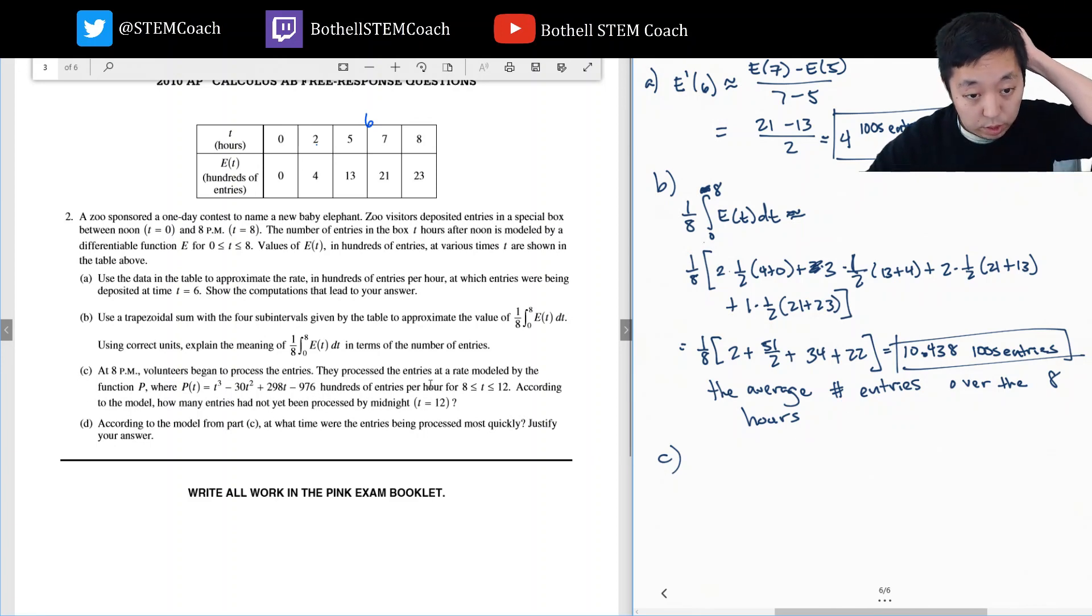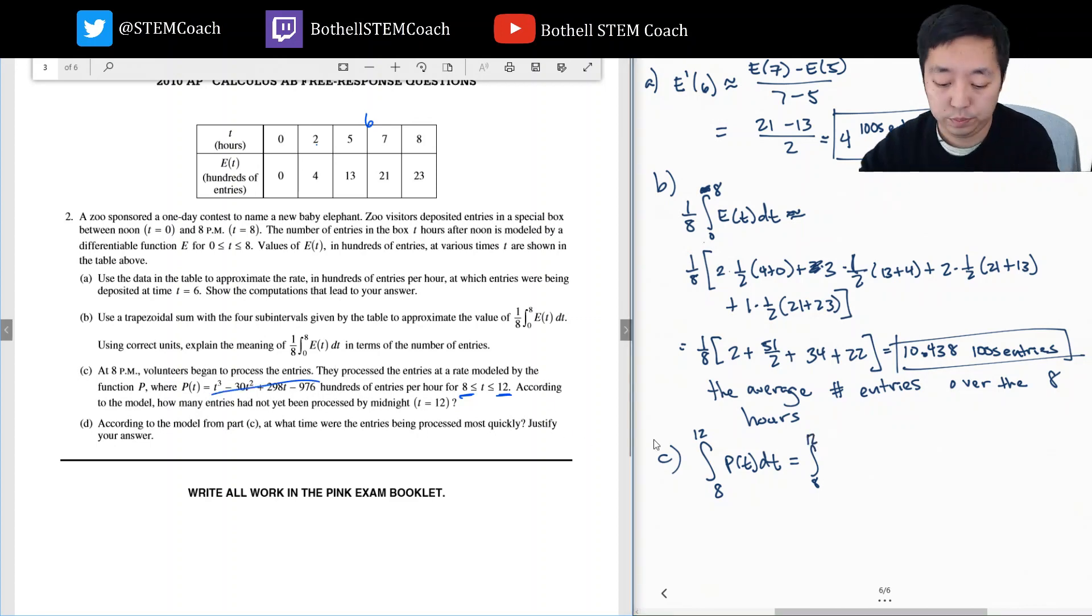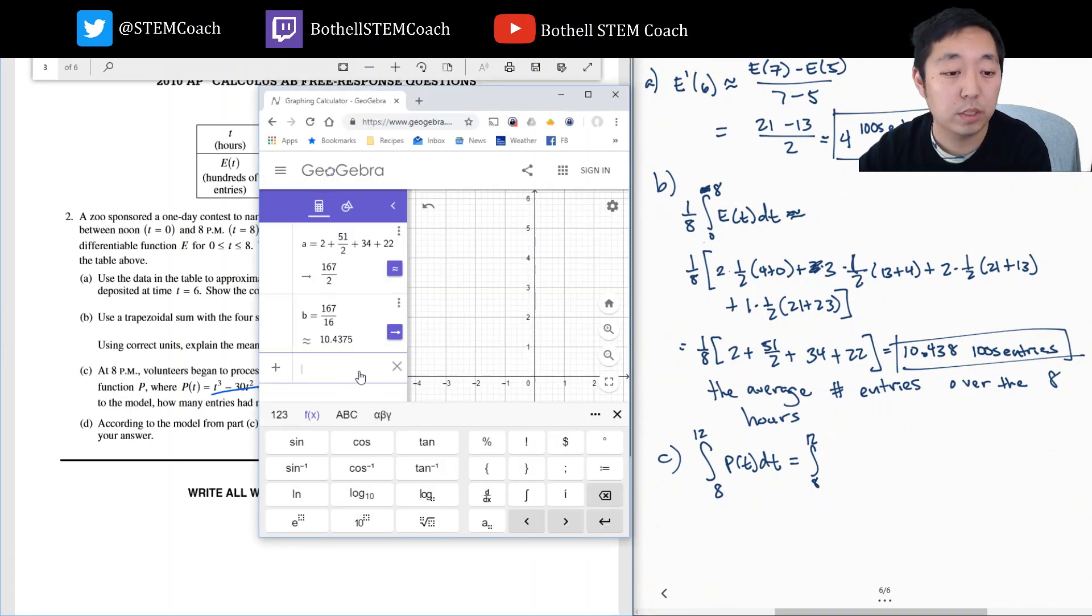See, at eight p.m., volunteers begin to process the entries. They process the entries at a rate modeled by the function P, where P of T equals that. According to the model, how many entries had not yet been processed by midnight? Okay. So at the end of the eight hundred, we have 2300. And then I have to integrate, this is a rate. So to find the total number of entries, I gotta integrate from eight to twelve. Why eight to twelve? Because that's when the entries were being processed. They weren't being processed outside of this time. So eight to twelve of all of this stuff.